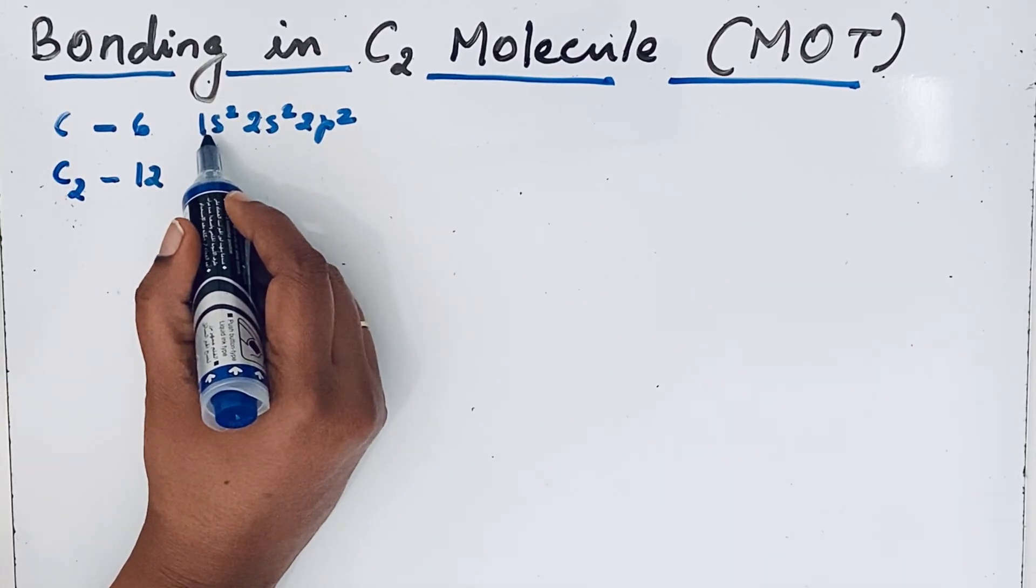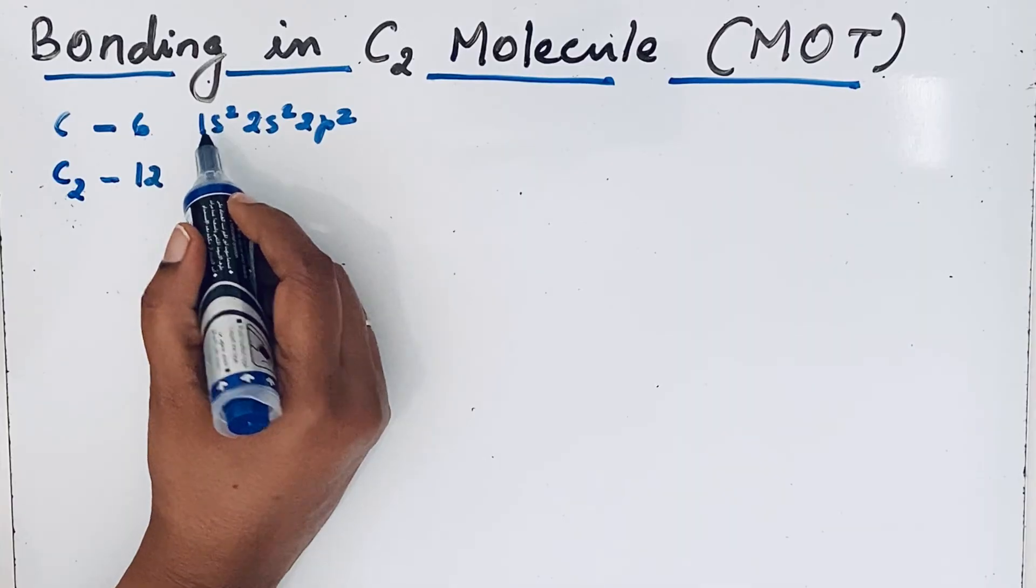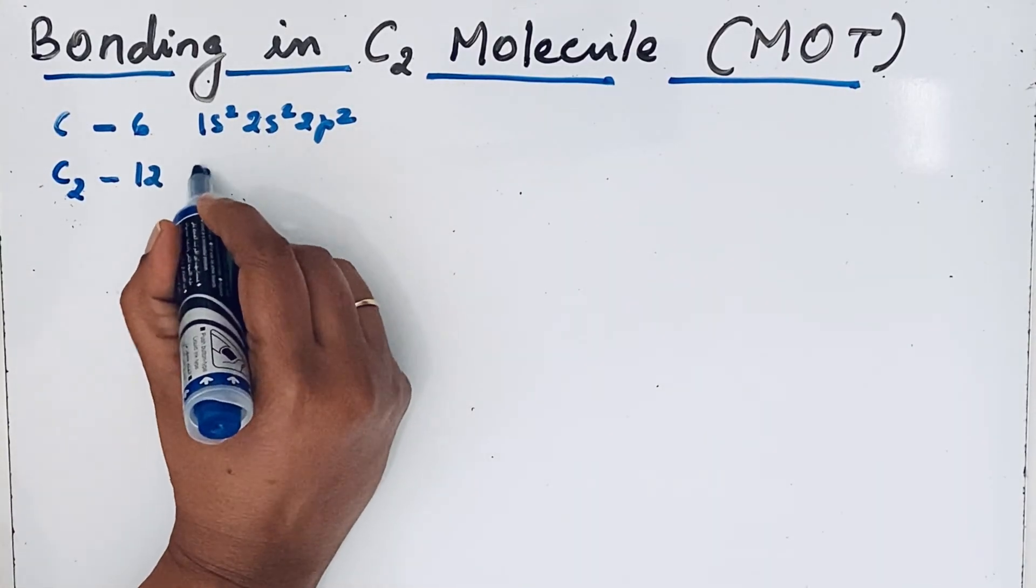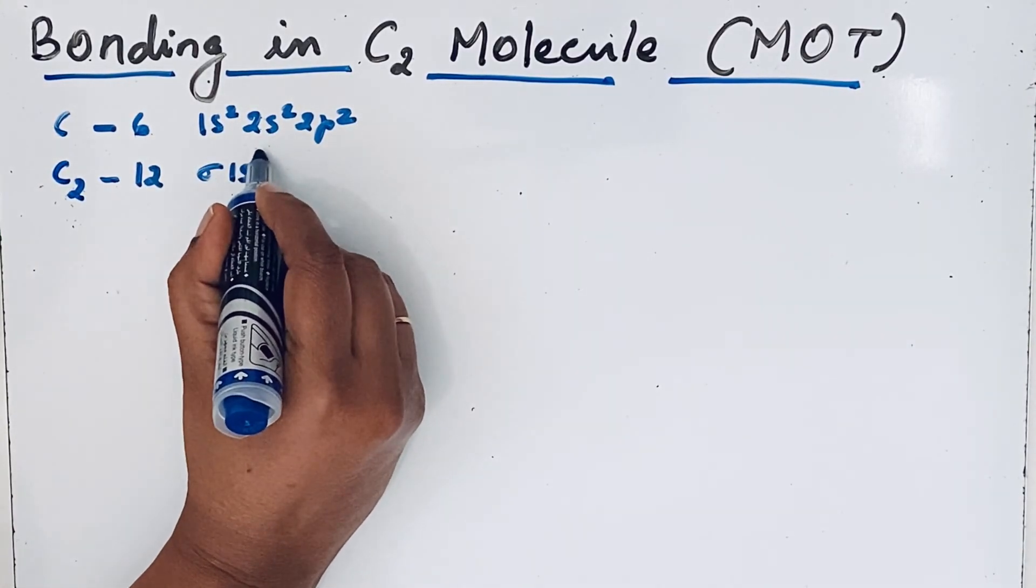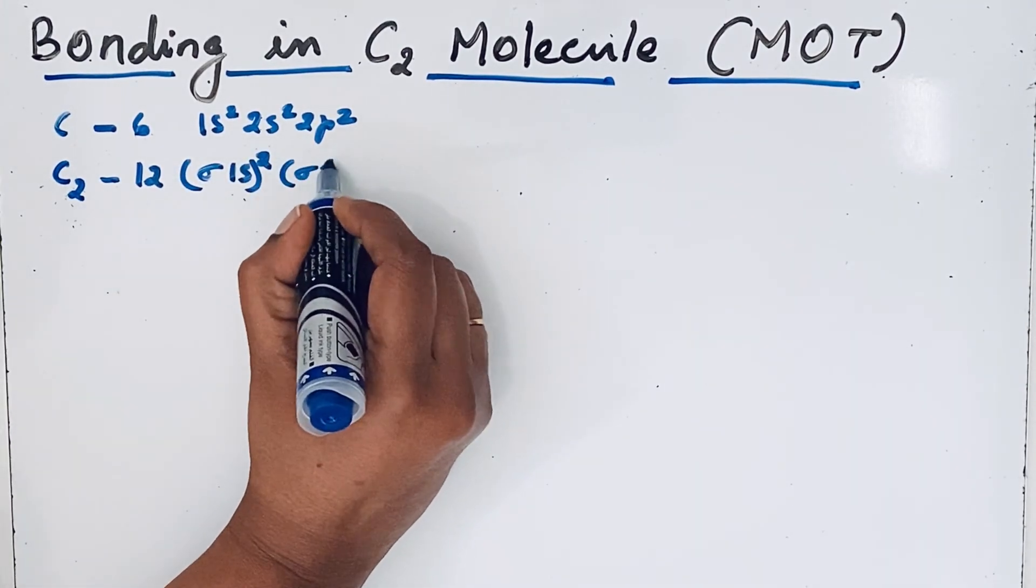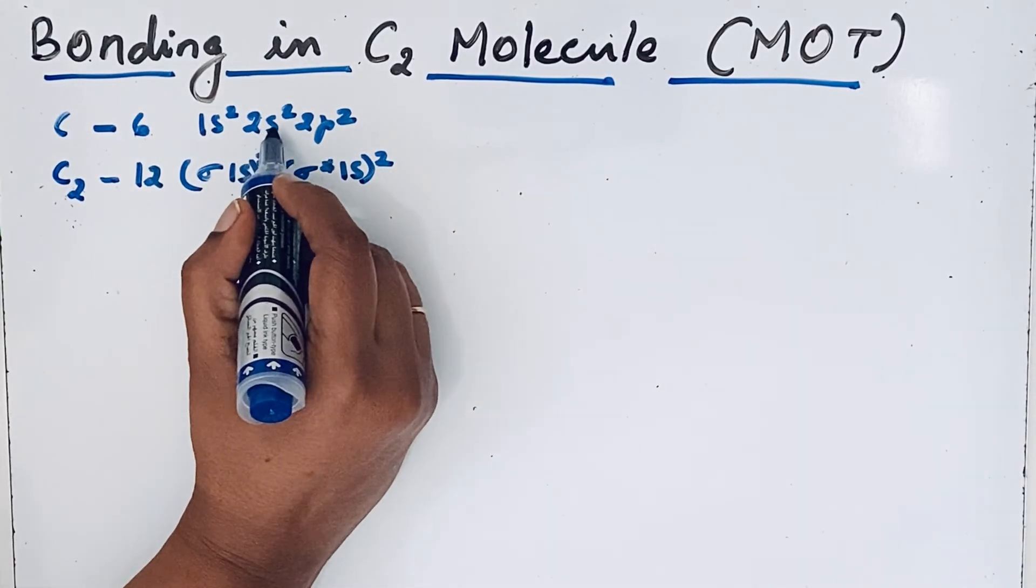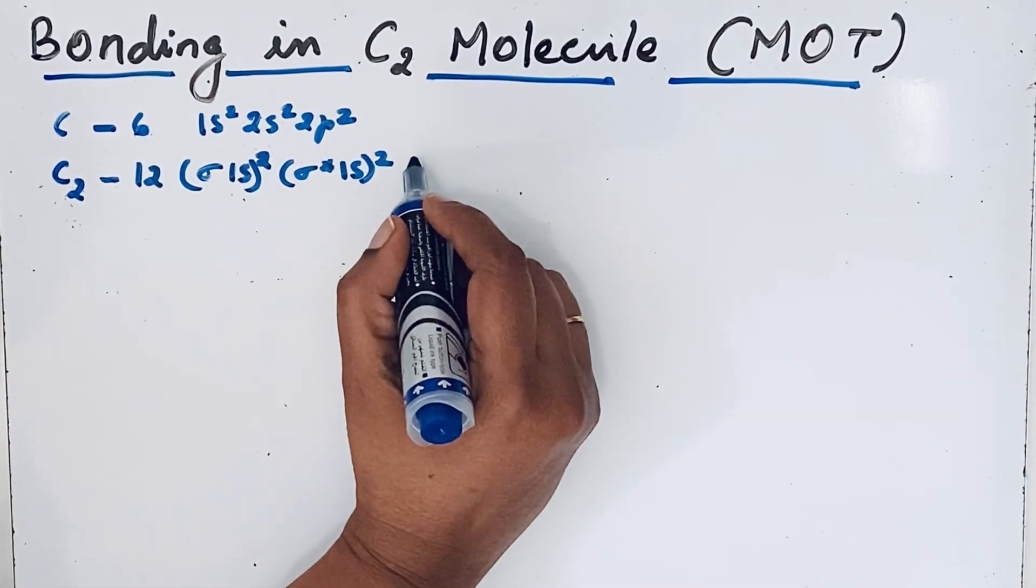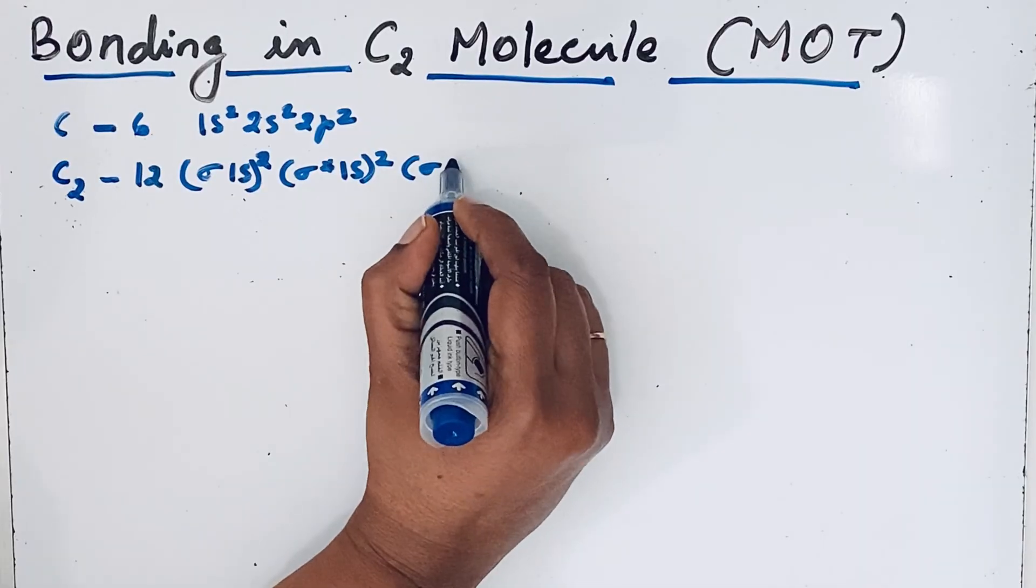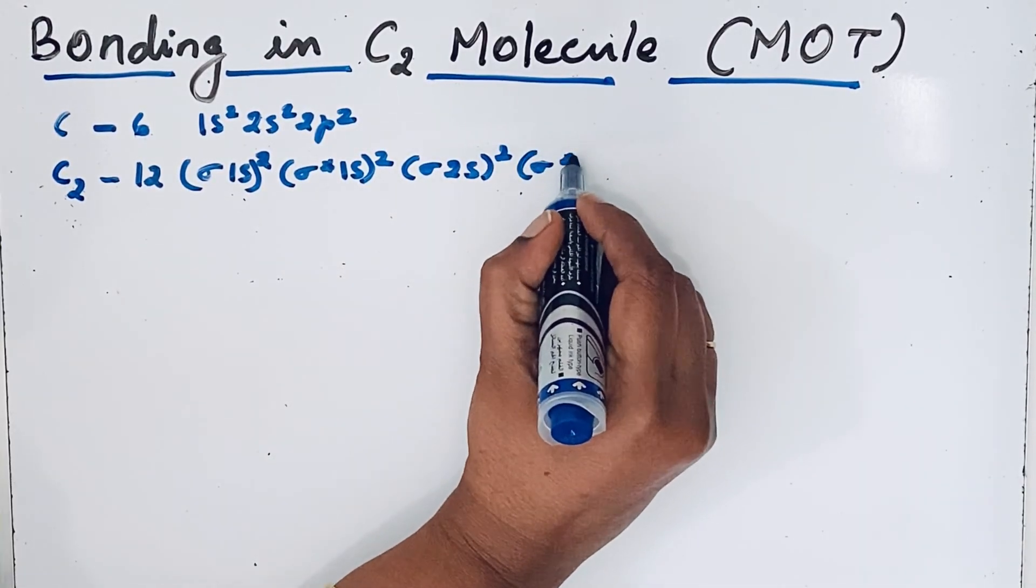If there are two atomic orbitals, it should form two molecular orbitals. For s orbital we can write σ1s² and σ*1s². The same way for 2s orbital, we can write σ2s² and σ*2s².